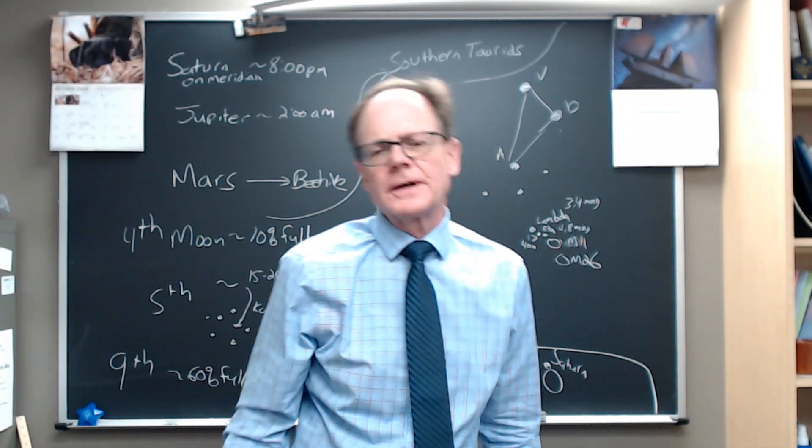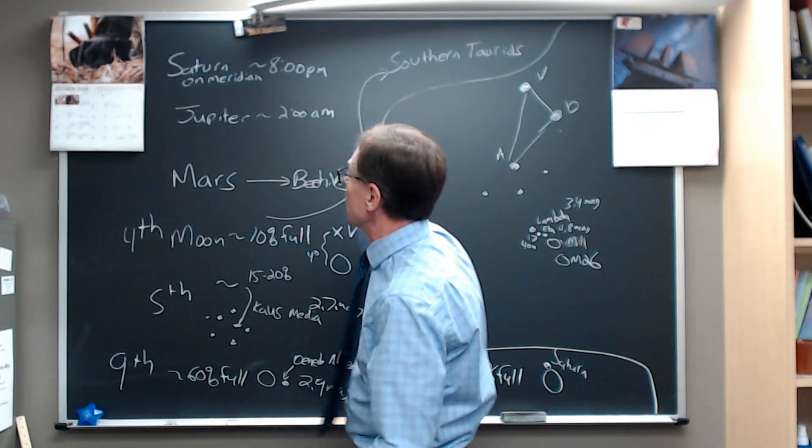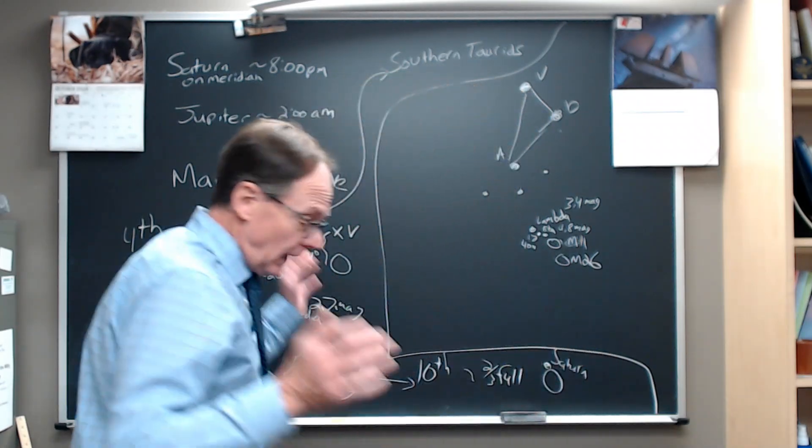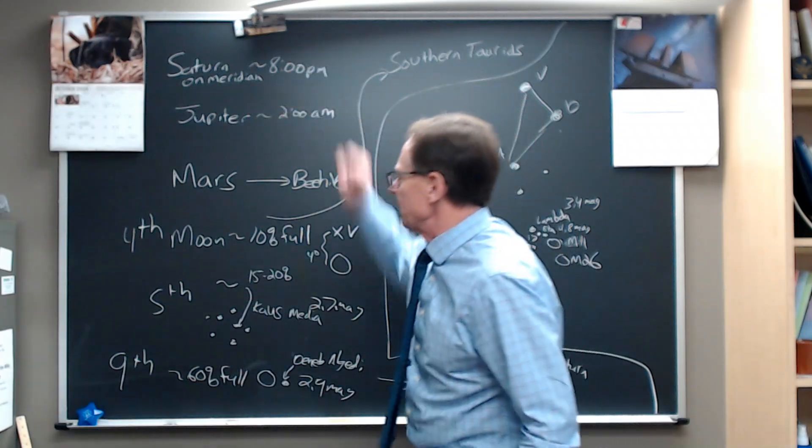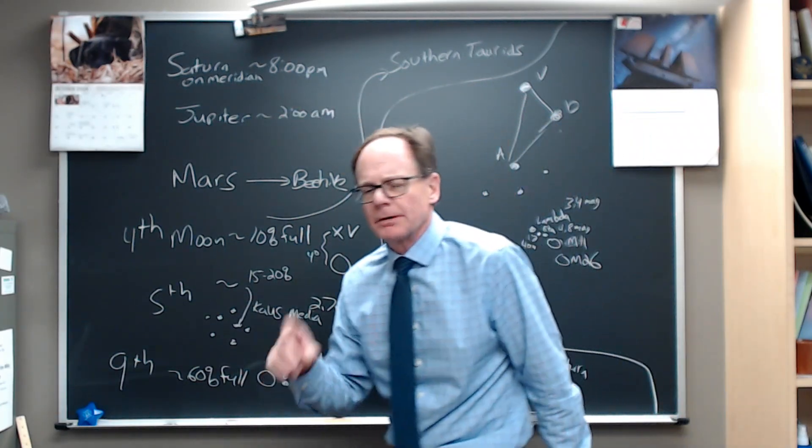Greetings, everyone. This is Jeff Wilkerson, professor of physics, bringing you the next in our series of what to look for in the night sky. We're talking about the week of November 4th this time around. So let's start. Let's look at the planets we've been looking at here. Then we'll talk about where the moon is and think about a couple of other things.